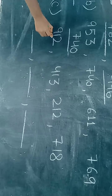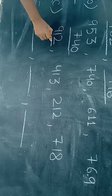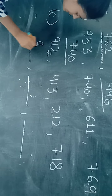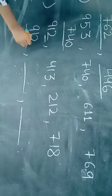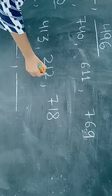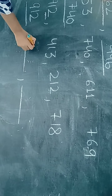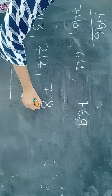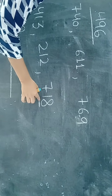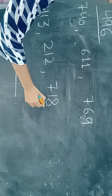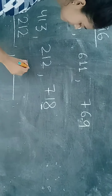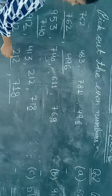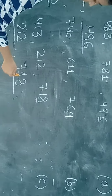Now see point C. 912 — ones digit is 2. Koi bhi digit jo 2, 4, 6, 8, or 0 se end hogi woh even number hai — so the even number is 912. Next 413 — ends in 3 — not an even number. Next: 212 — it's an even number, we write here 212. Now 718 — last digit is 8 — yes, it's an even number — 718. So the C answer is 912, 212, and 718.